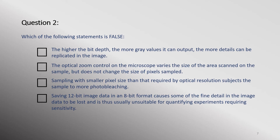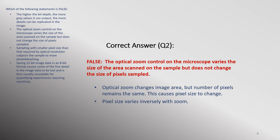Which of the following statements is false? The higher the bit depth, the more gray values it can output and the more details can be replicated in the image. The optical zoom control on the microscope varies the size of the area scanned on the sample, but does not change the size of pixels sampled. Sampling with smaller pixel size than that required by optical resolution subjects the sample to more photobleaching. Saving 12-bit image data in an 8-bit format causes some fine detail to be lost and is thus unsuitable for quantifying experiments requiring sensitivity. All of the statements are true except the second one — although optical zoom changes the size of the area imaged, if the number of pixels are kept the same, pixel size changes.